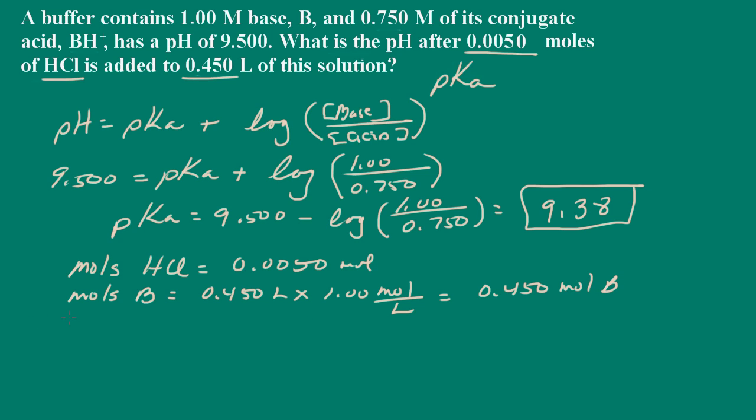We'll do the same here for the conjugate acid. So moles of the conjugate acid would be solution volume times the molarity of the conjugate acid, 0.750 moles per liter. And that gives us 0.338 moles of the conjugate acid. So now we're all set to go.